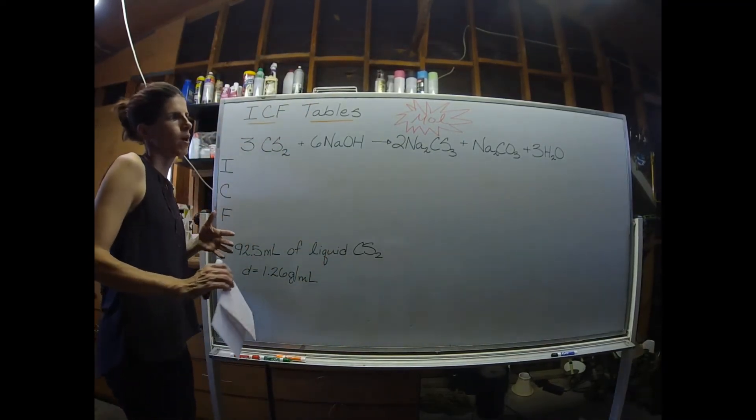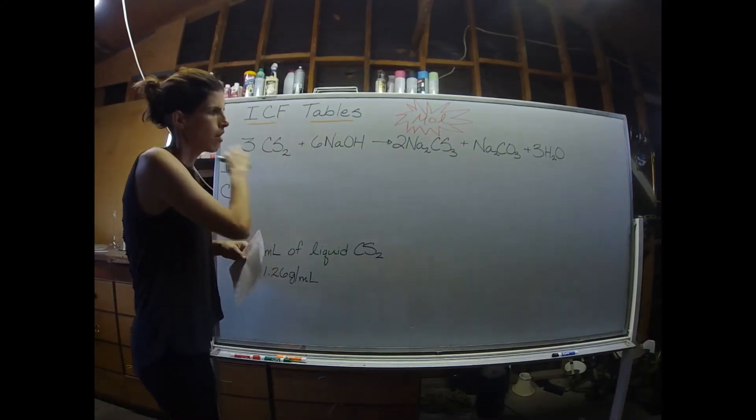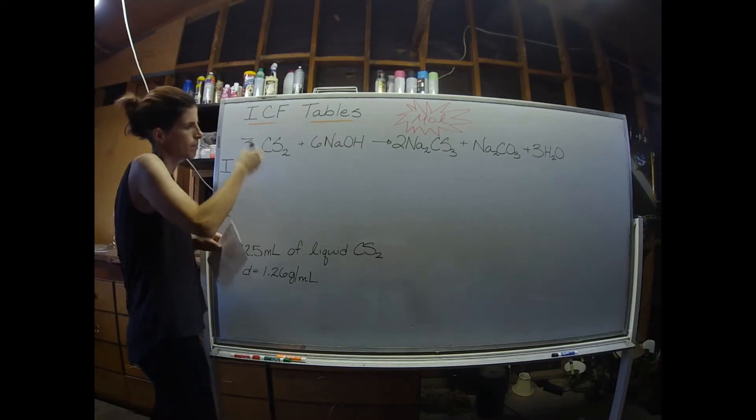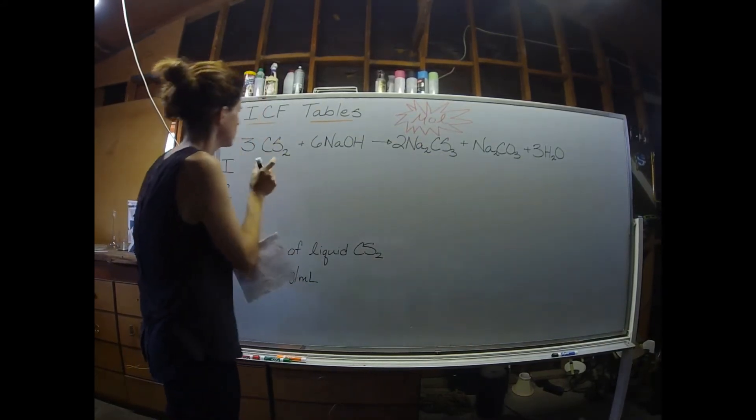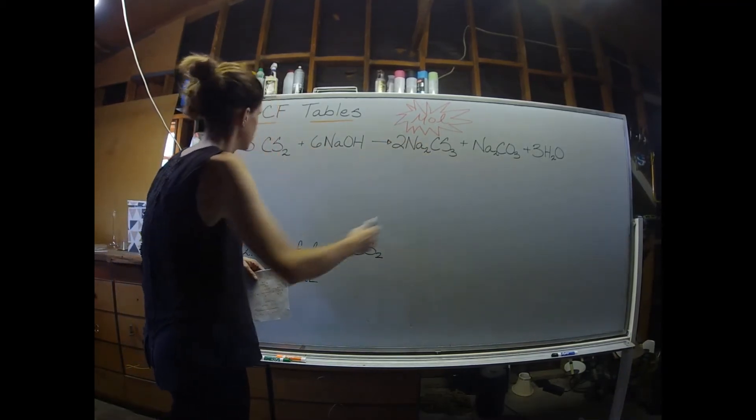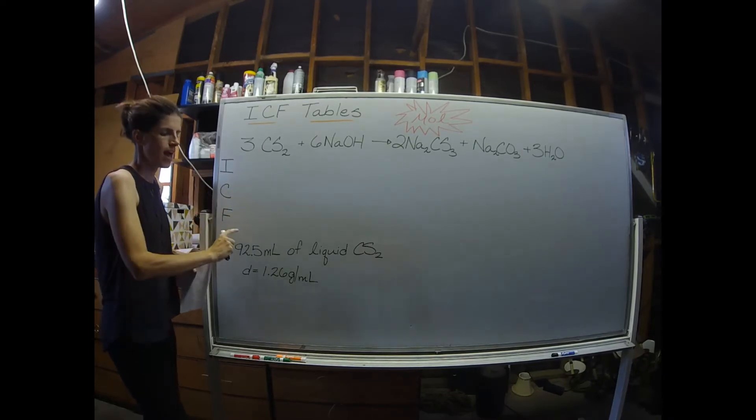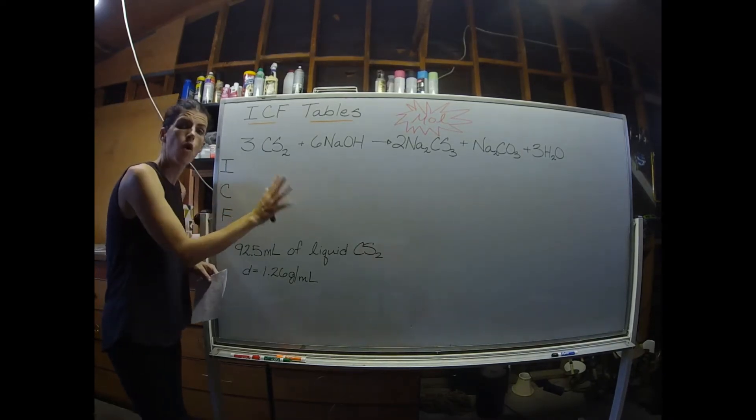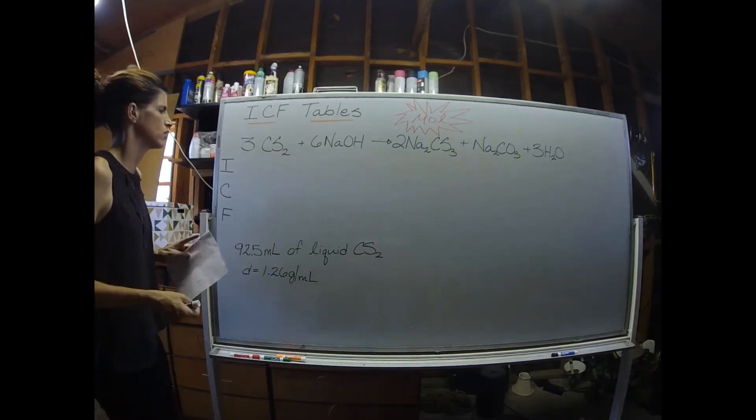And this is how you start the problem out: write out your balanced equation nice and neat. It's almost like you're setting up an Excel spreadsheet with columns. Each reagent is a column, each product is a column. And then for the I, the C, and the F, you can think of those as rows. So keep it nice and organized like a spreadsheet of sorts.